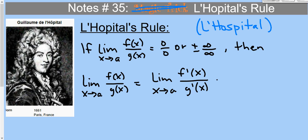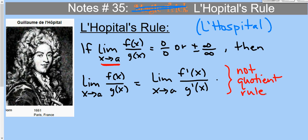A couple of things to point out: x→A could mean x→0, x→∞, or x→72 — it doesn't matter, it can be anything. Another very important point: we are NOT using the quotient rule. The quotient rule is not 'derivative of the top over derivative of the bottom' — this is something entirely different. It's not the quotient rule. We'll practice with about seven problems.